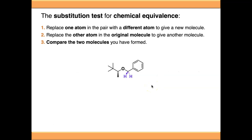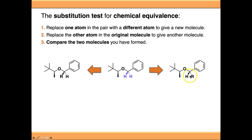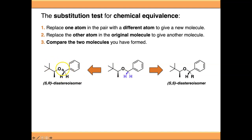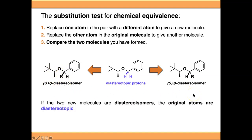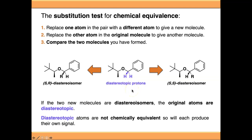In a scenario where we do the substitution test and the two new molecules are diastereoisomers — because there is an existing stereocenter and we create another one that changes configuration between the two substitutions — then the original atoms are diastereotopic. Diastereotopic atoms are not chemically equivalent: each gives a different signal in the NMR spectrum and they can couple to each other.